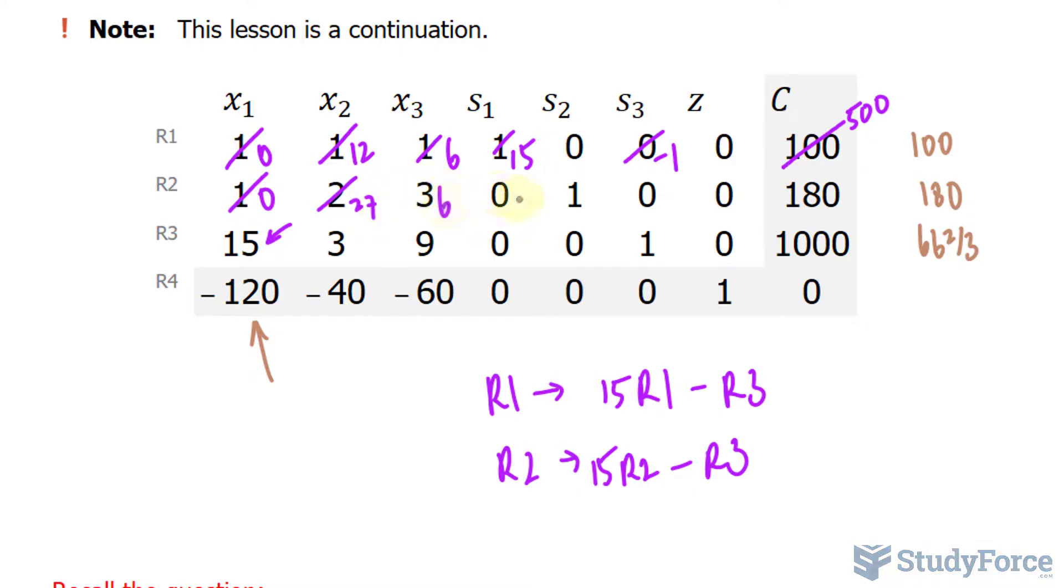36, 0 here, 15 here, negative 1, 0, and 2700.